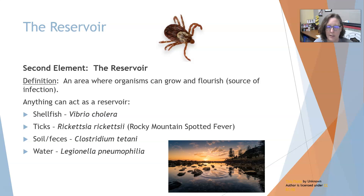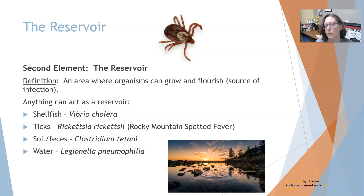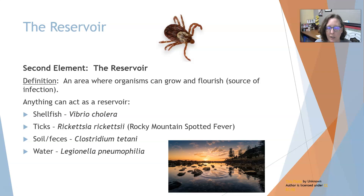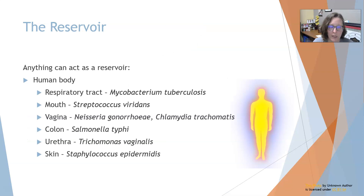Soil and feces can be contaminated with Clostridium tetani, which causes tetanus — the bacteria produces a toxin that gives you the symptoms. This is the one where if you step on a rusty nail contaminated with soil, you want to go get a tetanus shot, because if soil got into a deep wound, you could get infected. Water can also harbor all kinds of organisms, especially parasites and bacteria like Legionella pneumophila, which was found in air conditioning systems at a hotel during the Legionnaires' convention, making people sick with pneumonia — that's where it got its name.